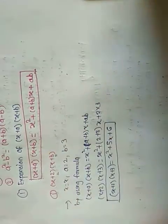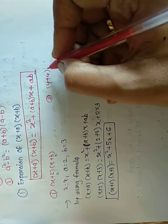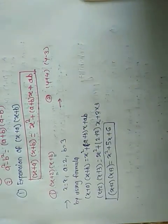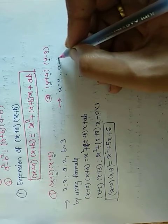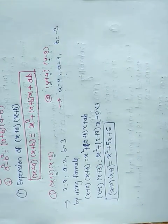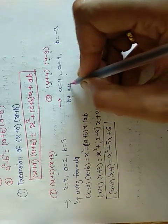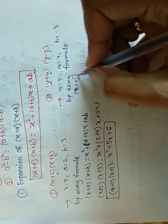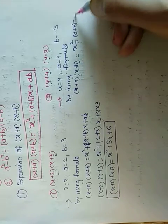Now let's see the second example: (y+4)(y-3). Here, the common term means the value of x is y, the value of a is 4, and the value of b is minus 3. Take the value with its sign. Using the formula: (x+a)(x+b) = x² + (a+b)x + ab.